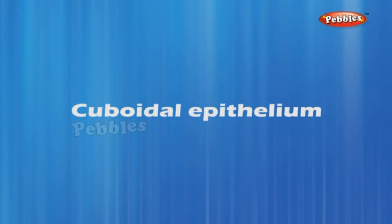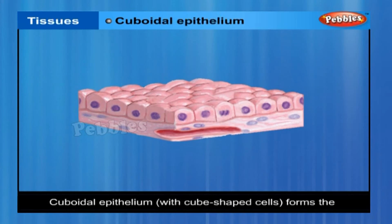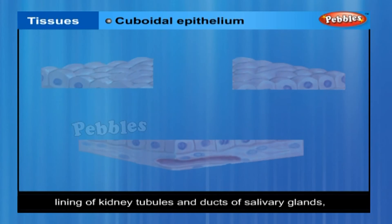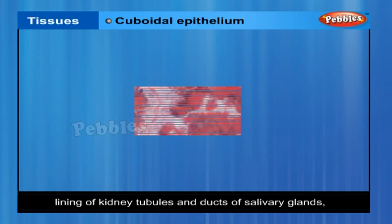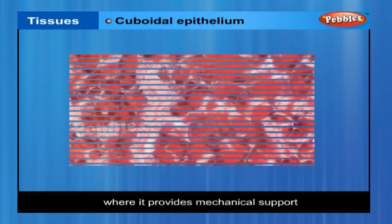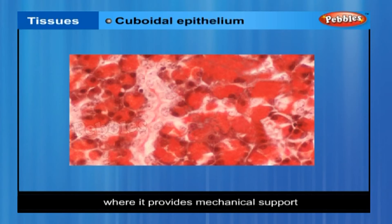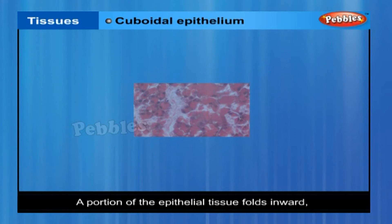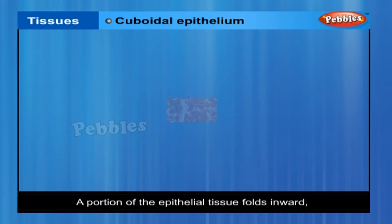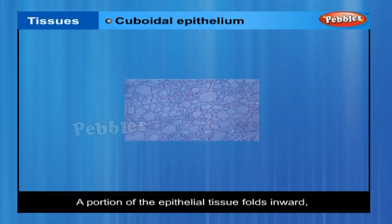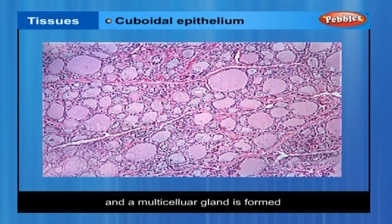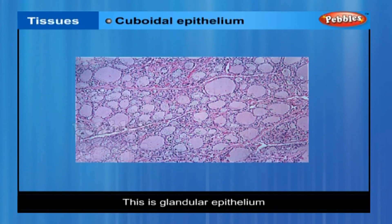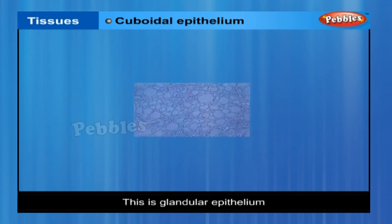Cuboidal epithelium. Cuboidal epithelium with cube-shaped cells forms the lining of kidney tubules and ducts of salivary glands, where it provides mechanical support. Epithelial cells often acquire specialized surfaces. Sometimes a portion of the epithelial tissue folds inward and a multicellular gland is formed. This is glandular epithelium.